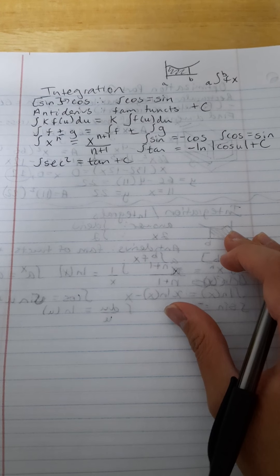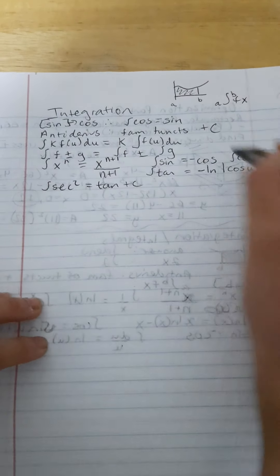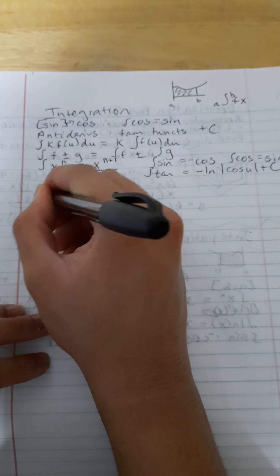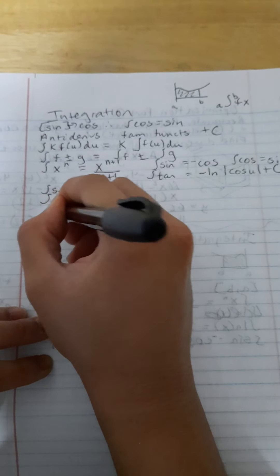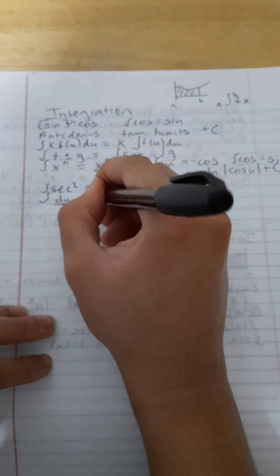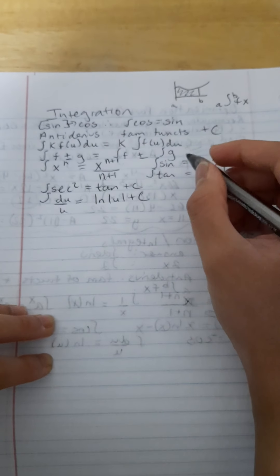Okay, so some of the more complicated ones would be ones involving, again, natural log. So if we have something like integral of du over u, sorry about that, is going to be equal to ln absolute value of u plus c.